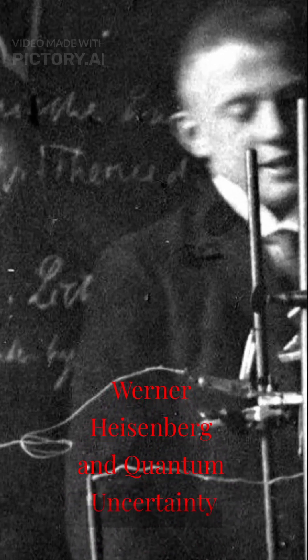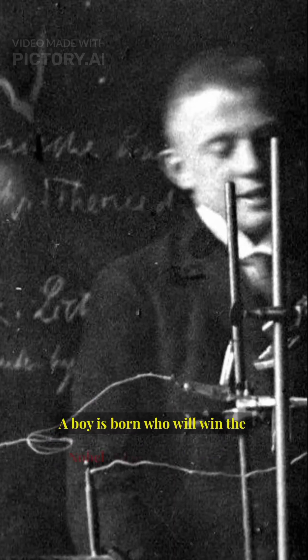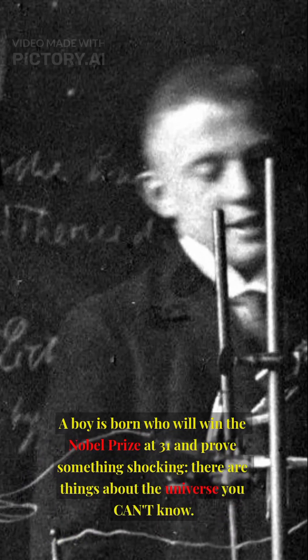December 5th, 1901. A boy is born who will win the Nobel Prize at 31 and prove something shocking: there are things about the universe you can't know. Ever.